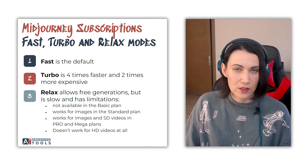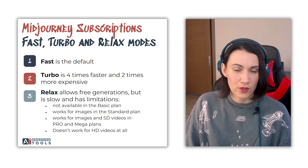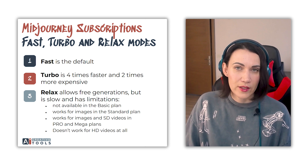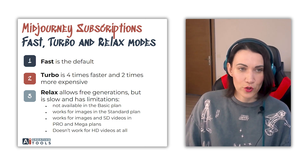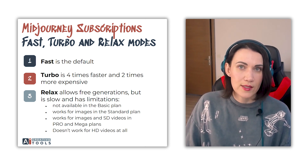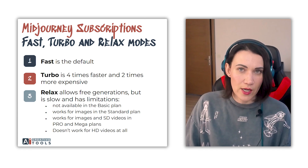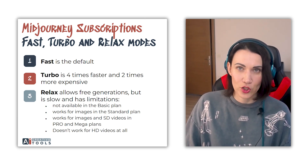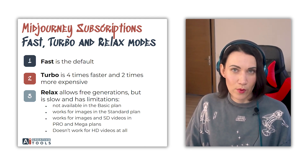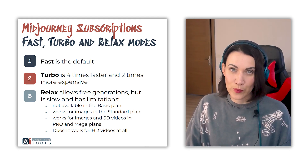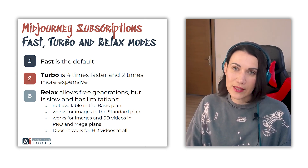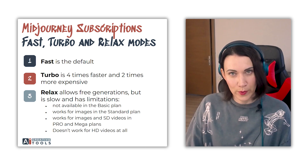There are also Fast, Turbo, and Relax modes. Fast mode is the default, and all the numbers I've mentioned refer to it. Turbo mode is up to 4 times faster than Fast mode, but costs twice as much GPU time. Relax mode is slow, but doesn't use GPU time. It offers unlimited images and SD video generations, but availability depends on your plan.